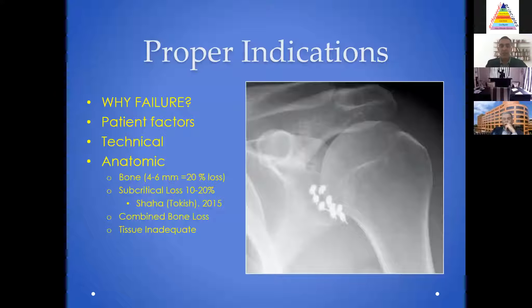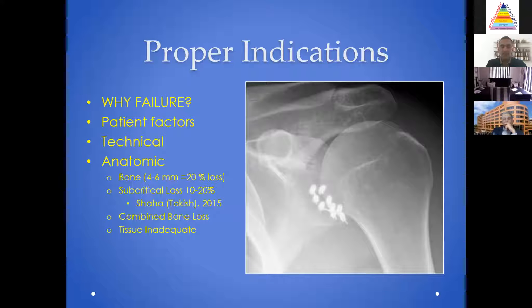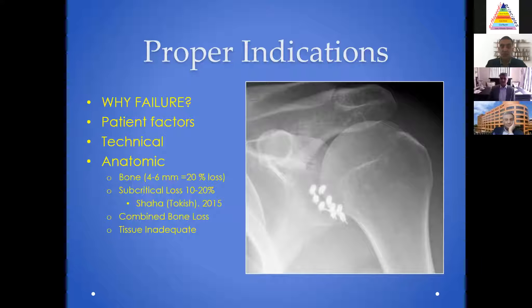Samir really touched on the first tip. The first tip about ideal orthopedic surgery is proper indications and understanding why someone failed, if they had previous surgery, and the anatomic factors such as bone loss — whether it's subcritical or not, whether it's combined bone loss, or whether it's inadequate tissue. So understanding the indications.